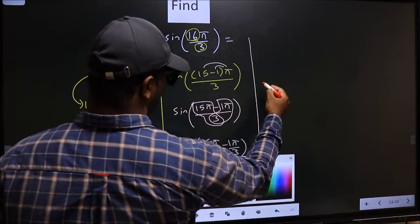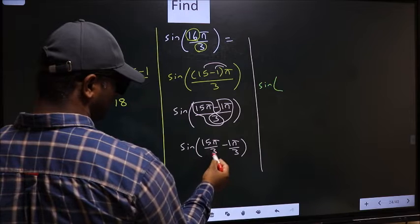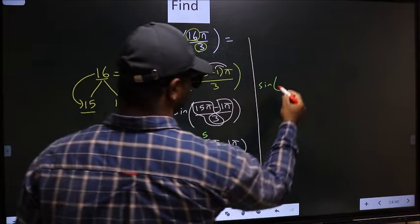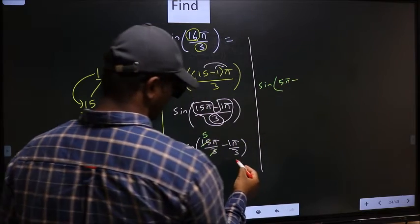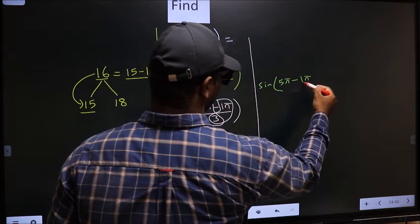Next, sin of, 15π by 3 you cancel, 3 ones, 3 fives, so we get 5π minus this angle as it is you write, 1π by 3.